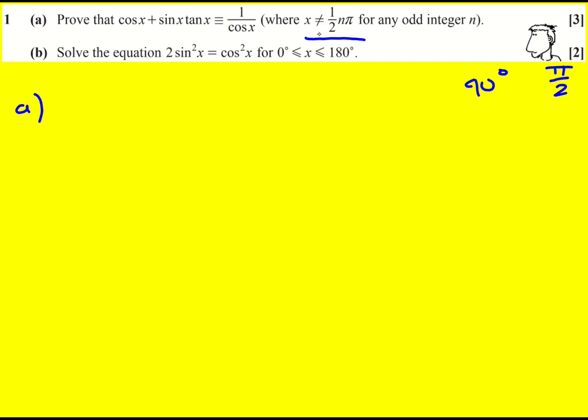What this is saying is we can't have x equal to 90, that would be when n is 1, when n is 3 it would be 270. We can't have any of these because actually cos would equal 0 there. So basically it's just defining the domain of this identity. We're not allowed certain values of x.